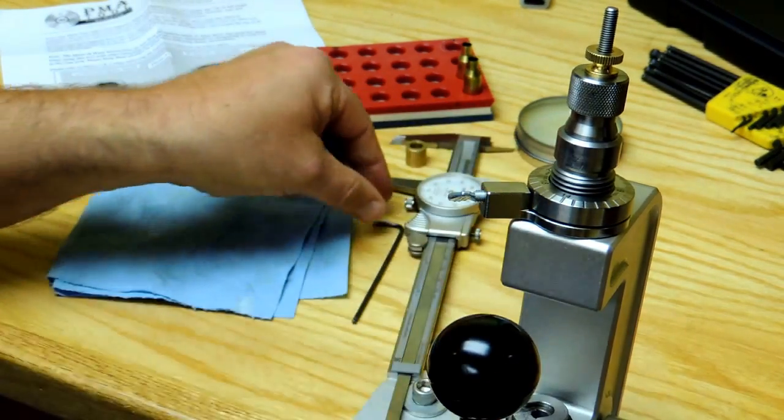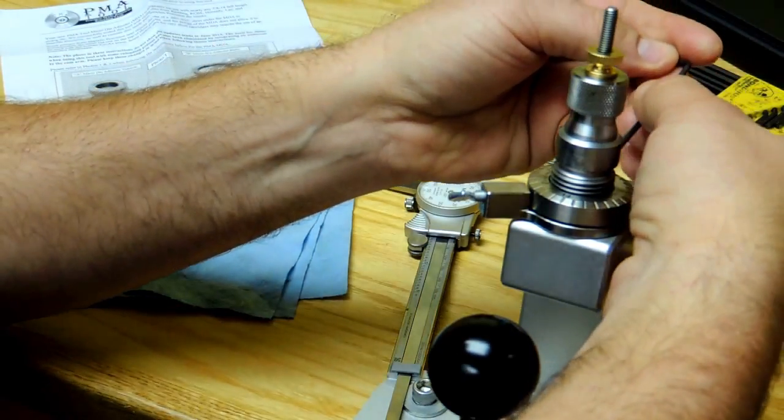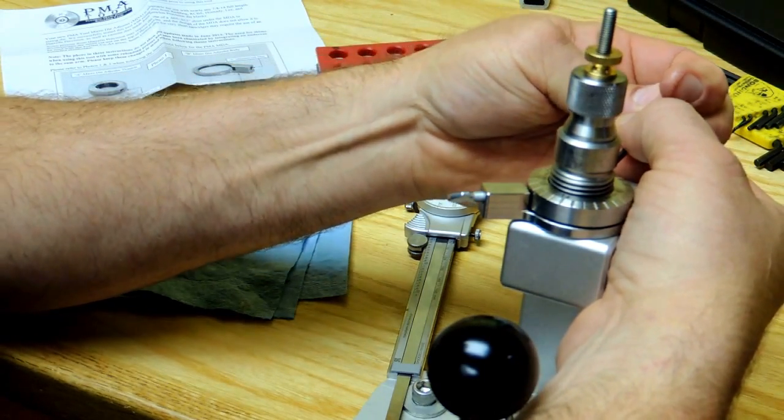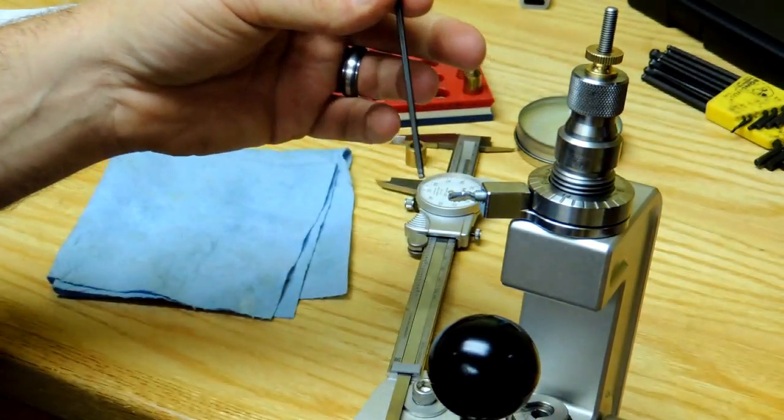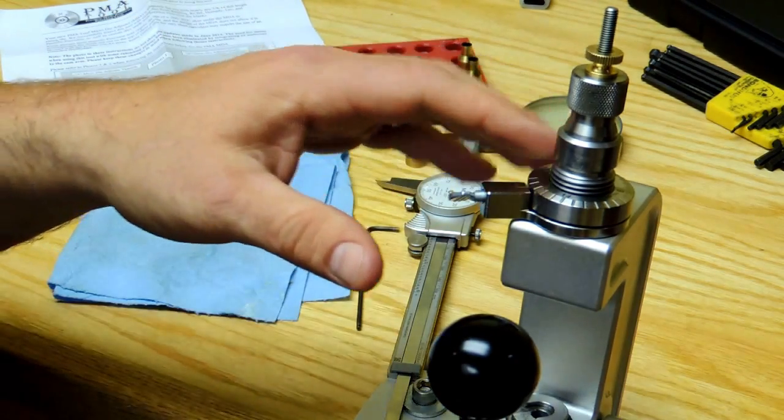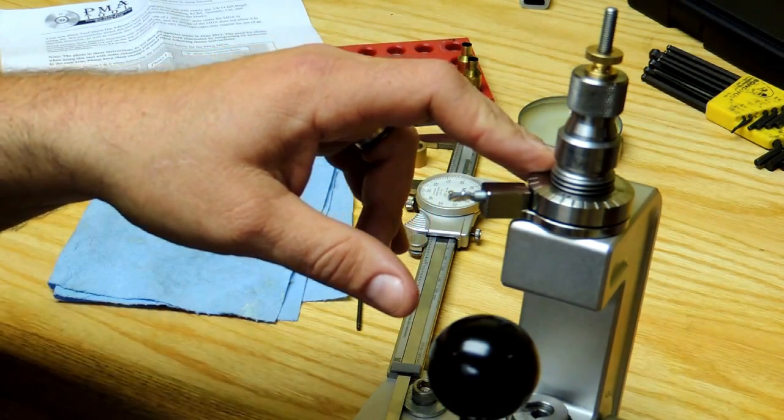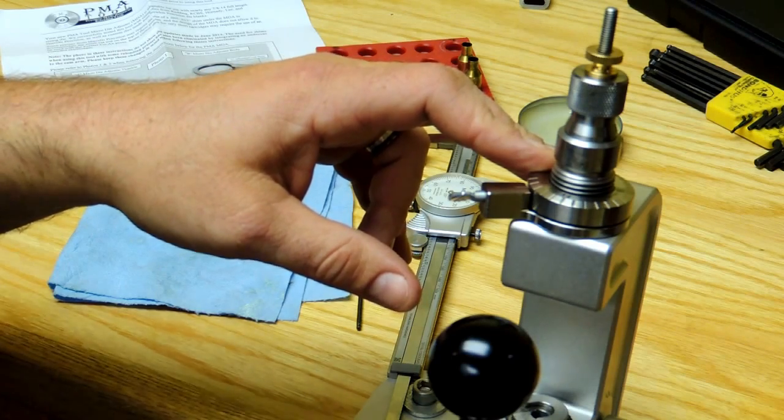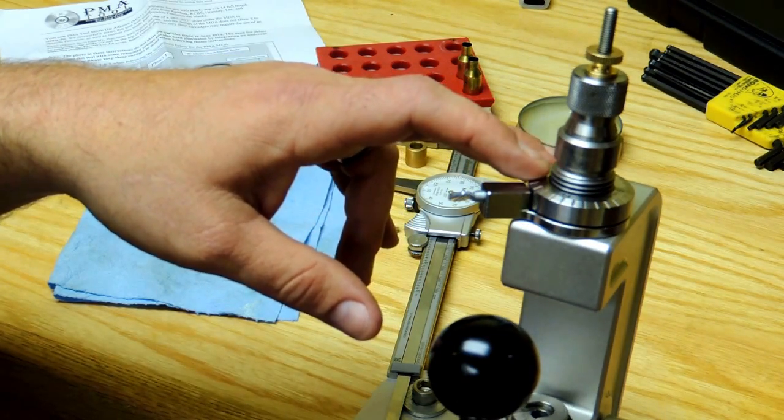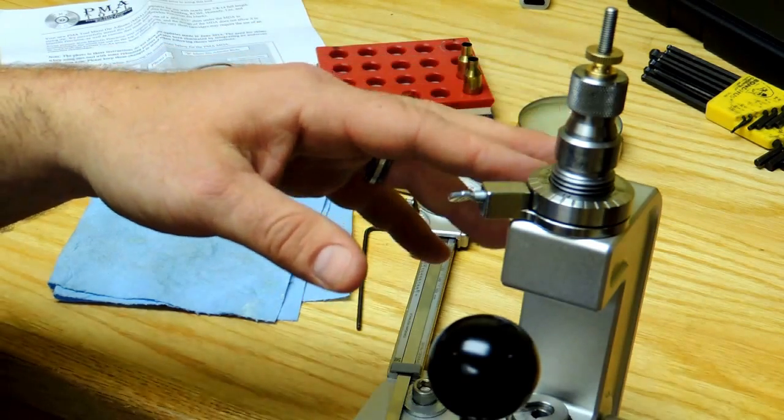Lower the ram and then lock the die adjuster onto your die using a 3/32 hex wrench. Now there is a lead ball in front of that set screw that prevents the set screw from damaging the threads on your die, so there is no worries on that.